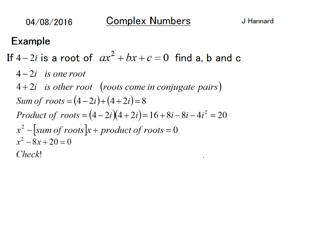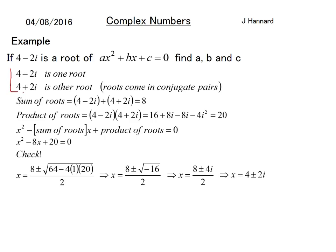Using the quadratic formula: x = (8 ± √(64 - 80)) / 2 = (8 ± √(-16)) / 2. The root of -16 is 4i, so we get (8 ± 4i) / 2. Dividing everything by 2, we get 4 ± 2i, which is what we started with. So there you go, it works! Therefore a = 1, b = -8, c = 20.